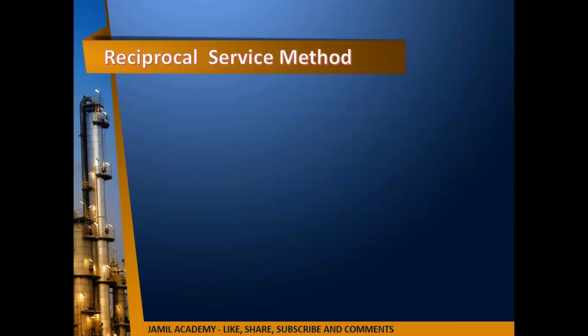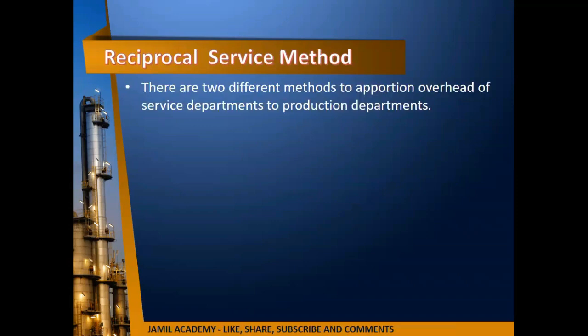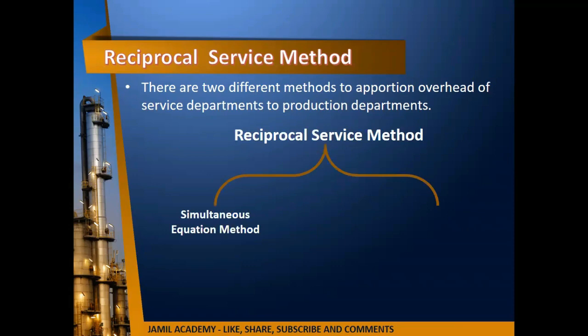Under the reciprocal service method, there are two different methods to apportion overheads from the service department to the production department. Number one: the simultaneous equation method. Number two: the repeated distribution method.